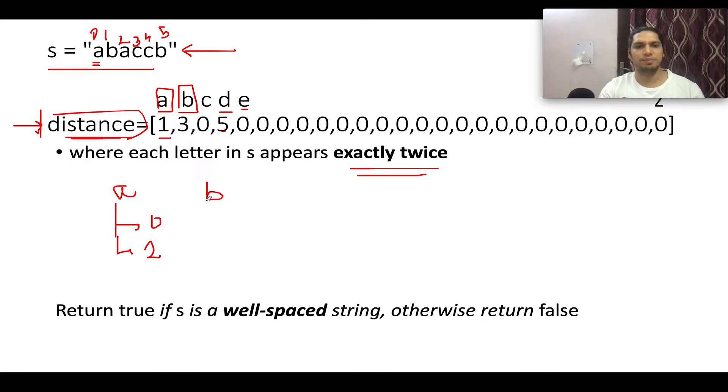Where does B occur? B occurs at 1, B occurs at 5. So let's write it up. B occurs at 1, B occurs at 5. Let's do it for C. The first index at which C occurs is 3 and the second index at which C occurs is 4. So this is it.